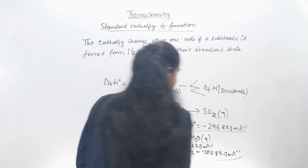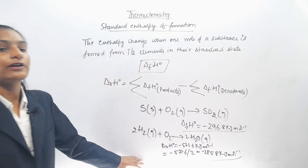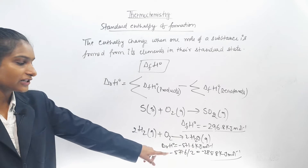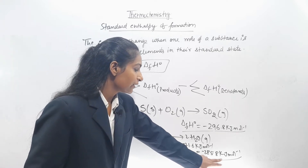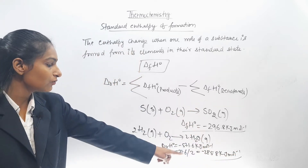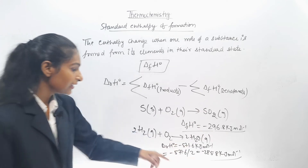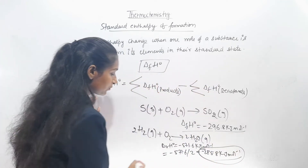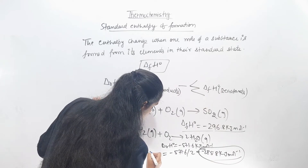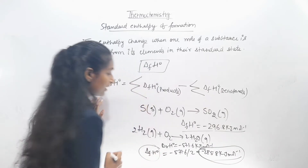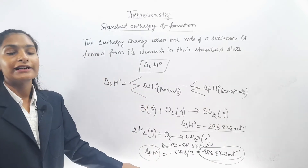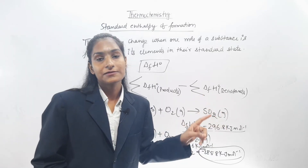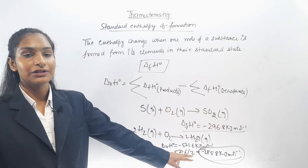So the value is minus 285.8 kilojoule per mole, which equals ΔfH°, because this represents 1 mole of the substance formed.